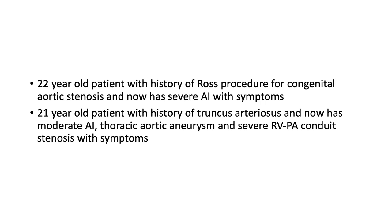We present two patients. The first is a 22-year-old patient with a history of a Ross procedure for congenital aortic stenosis who now has severe aortic insufficiency with symptoms. The second is a 21-year-old patient with truncus arteriosus who now has moderate AI, aortic aneurysm, and severe RV-to-PA conduit stenosis with symptoms.